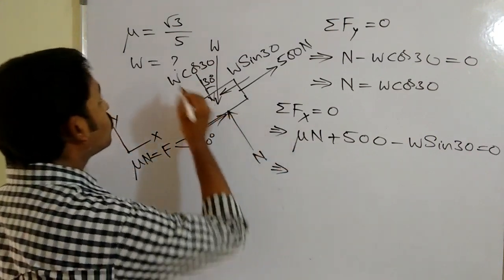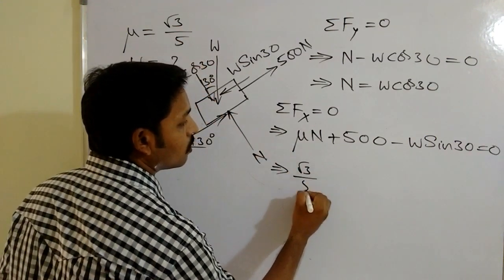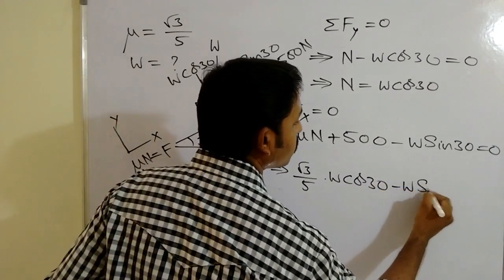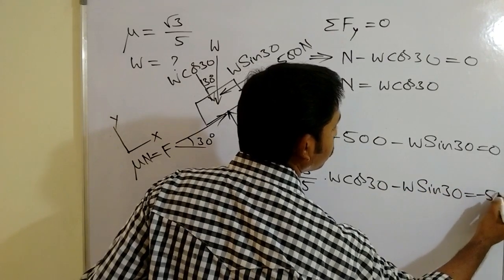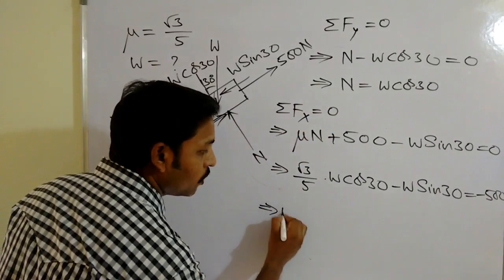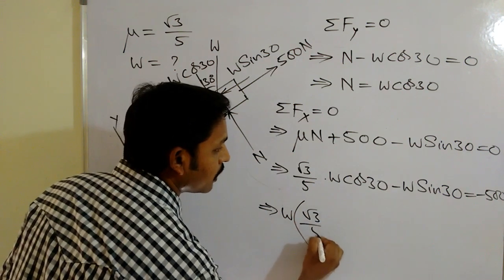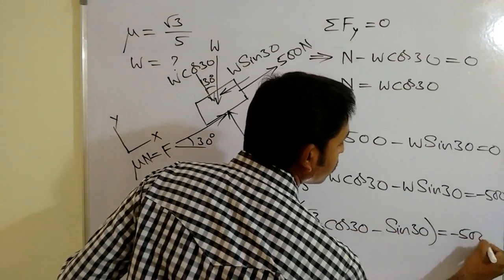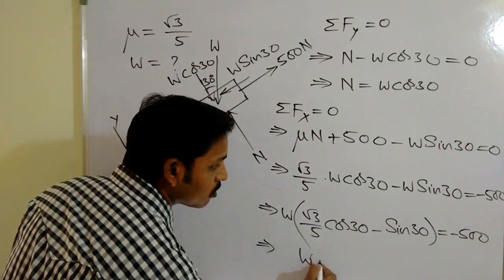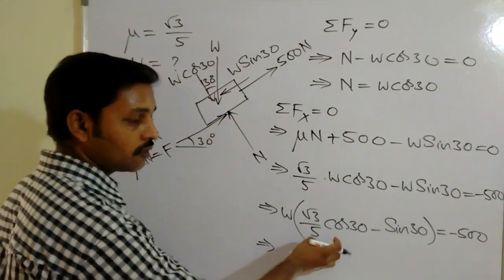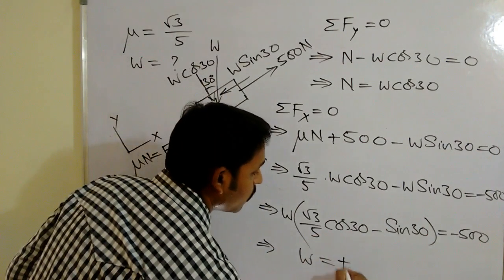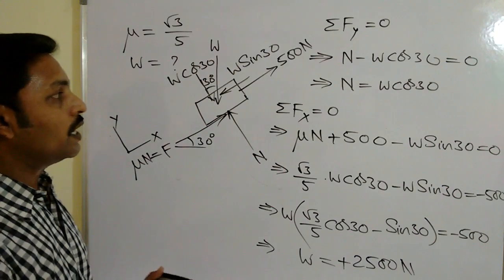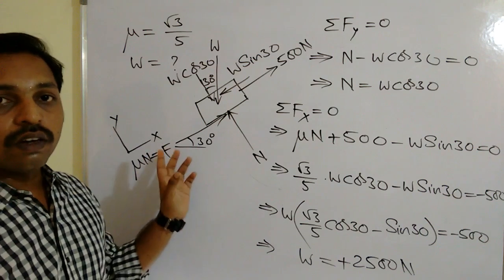Substituting μ = √3/5 and N = W cos30°: (√3/5)(W cos30°) + 500 − W sin30° = 0. Taking W common: W(√3/5 · cos30° − sin30°) = −500. Solving this gives W = −500 divided by that bracket value. The negatives cancel and you get W = 2500 Newtons. So the weight of the block is 2500 Newtons.